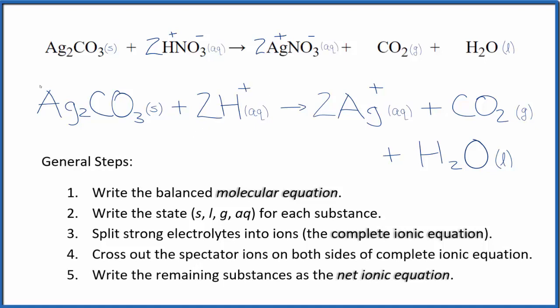We have 2 times 1 plus. We have 2 plus in the reactants and 2 times 1 plus, 2 plus in the products. So charge is the same on both sides. This is Dr. B with the balanced net ionic equation for Ag2CO3 plus HNO3. Thanks for watching.